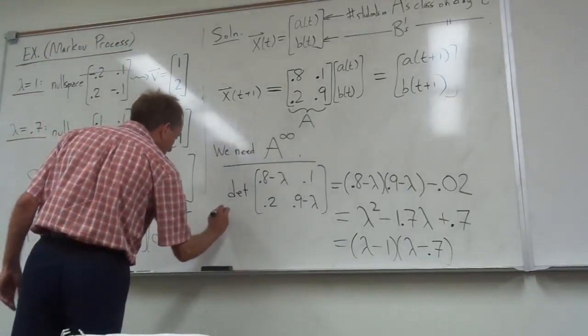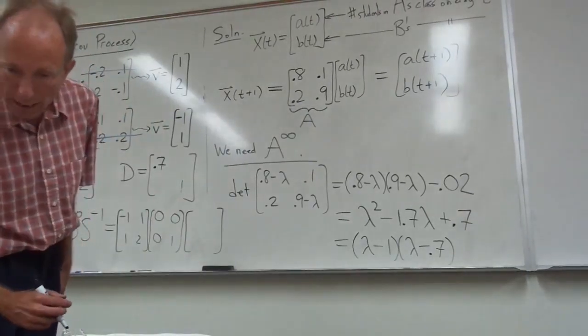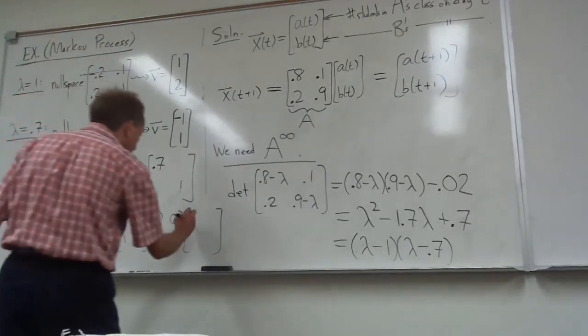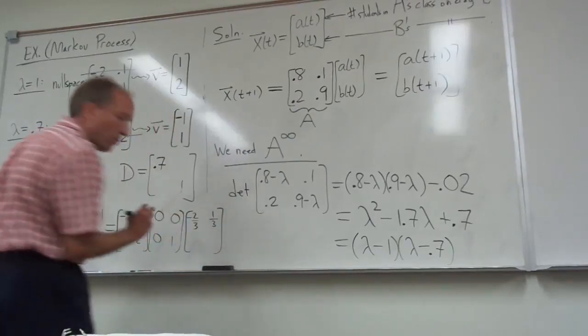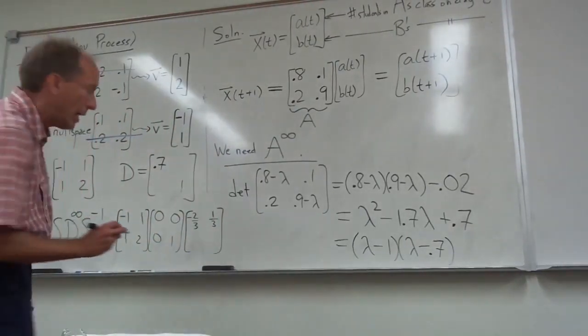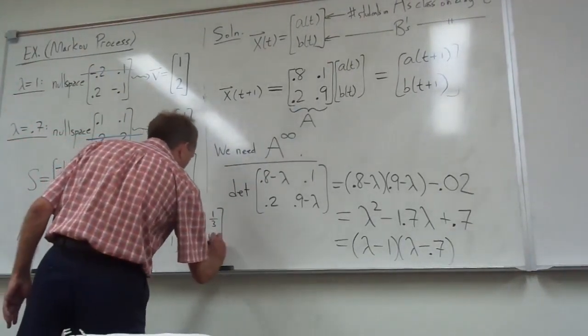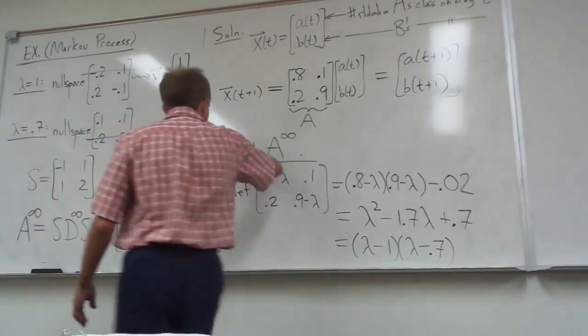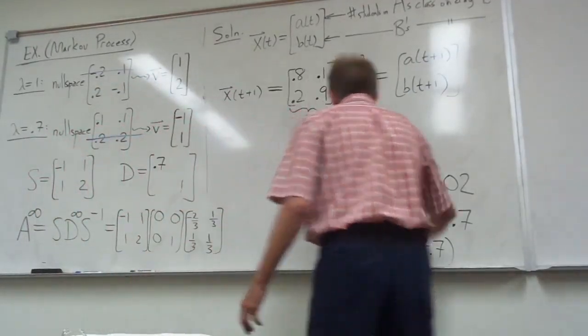And then S inverse. This is the inverse of a 2 by 2, which you do have to work out. I'm going to save you the grief of doing that and just tell you the answer. Negative 2 thirds and 1 third. And then 1 third and 1 third. That's what you have right there.